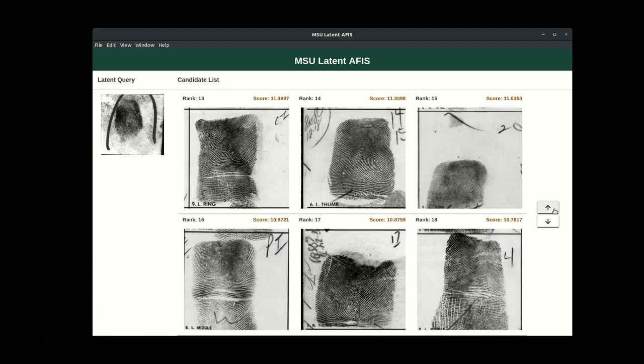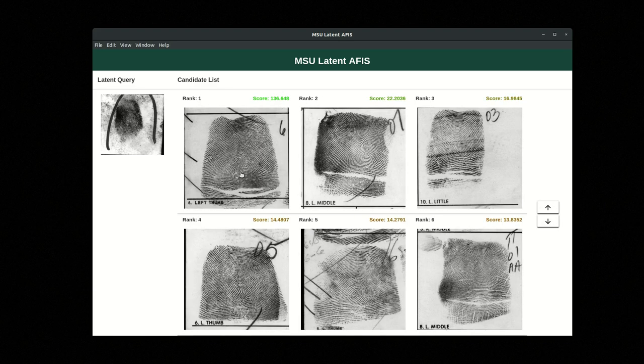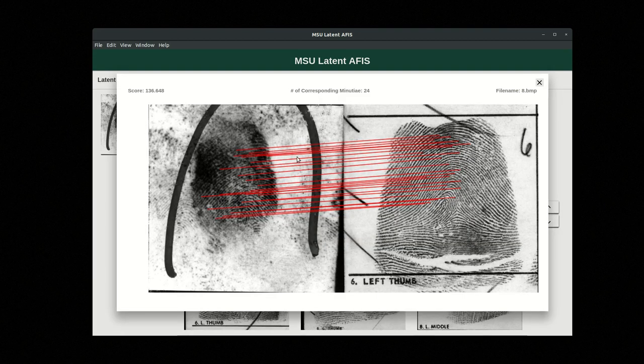The last thing we can look at here is going to be the correspondence. For each potential candidate, we can see the correspondence that the algorithm found between the latent query and the rolled print. Now here with this rank one candidate, this is a closed data set, so I happen to know in this example that it is a correct match, and you can see the correspondence ends up looking pretty good, and you can see the number of minutiae points here that it found in correspondence.